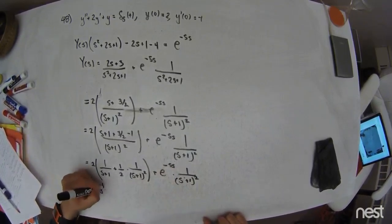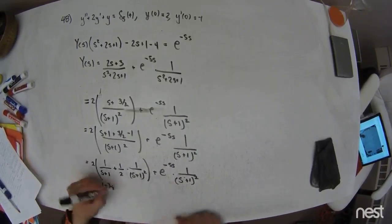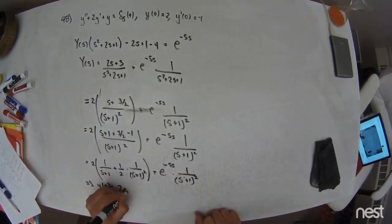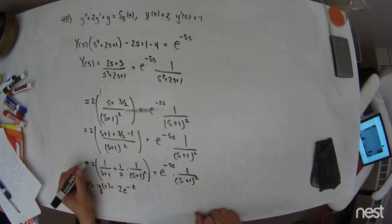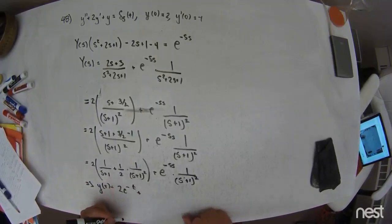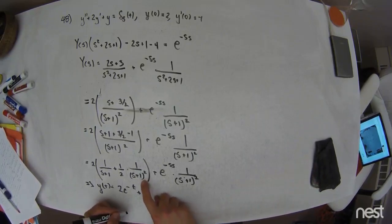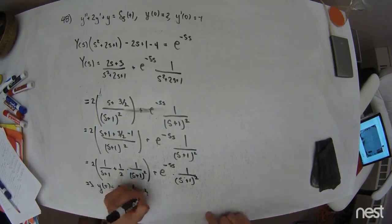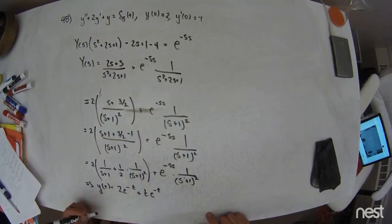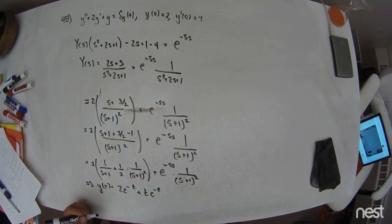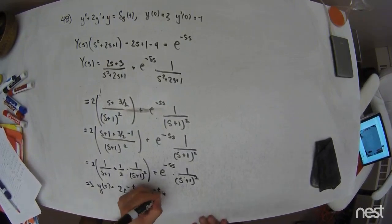So if I take the inverse transform, this is Y of T. This term right here is table entry 12. That's 2E to the negative T. And the 2 hits this two sets of 1. And then this is table entry farther down. It's a T multiplication problem. So this is TE to the negative T.